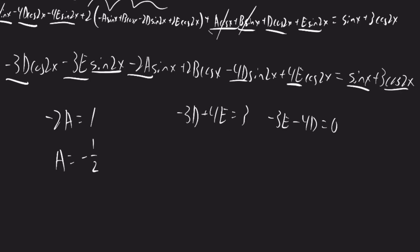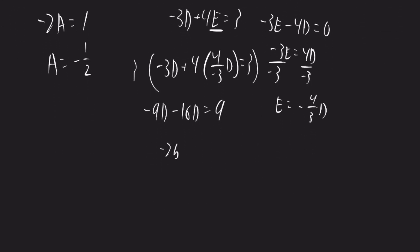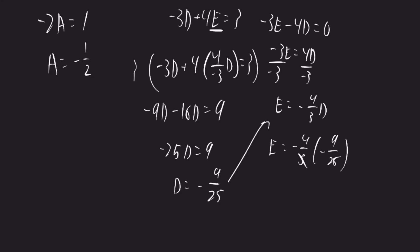We have two equations with two unknowns, so we can solve for a solution. From negative 3e minus 4d equals 0, we get negative 3e equals 4d, so e equals negative 4 thirds d. Plugging into negative 3d plus 4e equals 3: we get negative 3d plus 4 times negative 4 thirds d equals 3. Multiplying through by 3 gives negative 9d minus 16d equals 9, so negative 25d equals 9, meaning d equals negative 9 over 25. Then e equals negative 4 thirds times negative 9 over 25, which simplifies to 12 over 25.